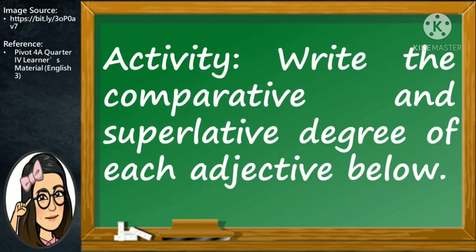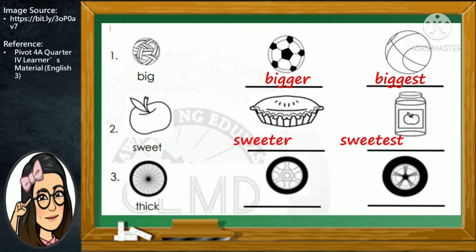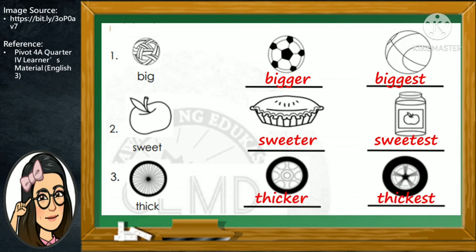For your first activity, I want you to write the comparative and superlative degree of each adjective which describes the pictures I will show you. For number one, the comparative and superlative degree of the adjective big is bigger and biggest. For number two, the adjective sweet gives sweeter and sweetest. For our last picture, the adjective thick gives thicker and thickest.